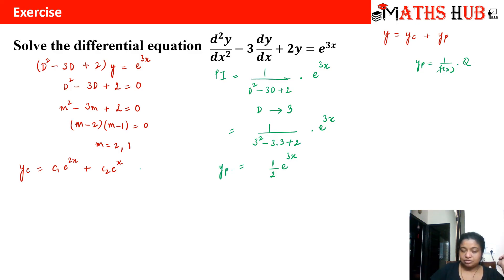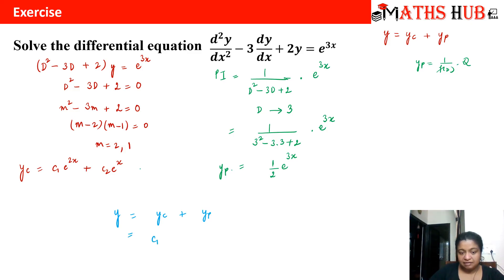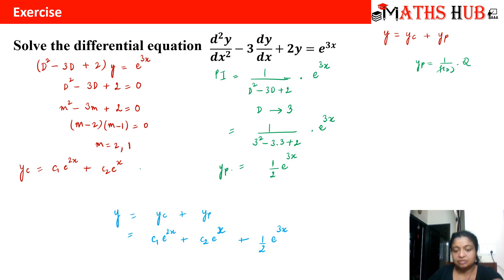So the general solution is y = yc + yp = c₁e^(2x) + c₂e^(x) + (1/2)e^(3x). This is our final solution.